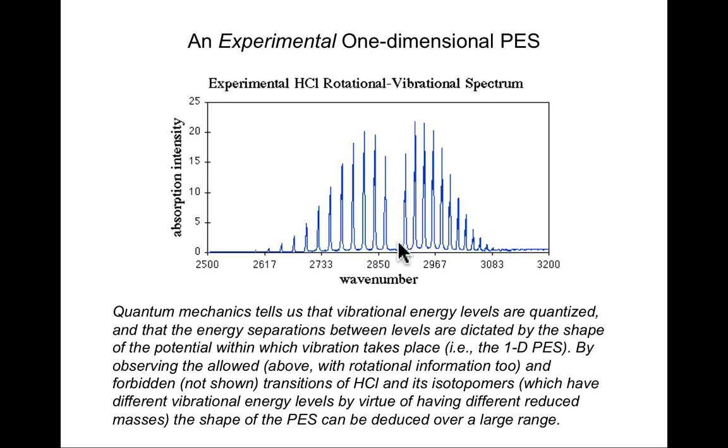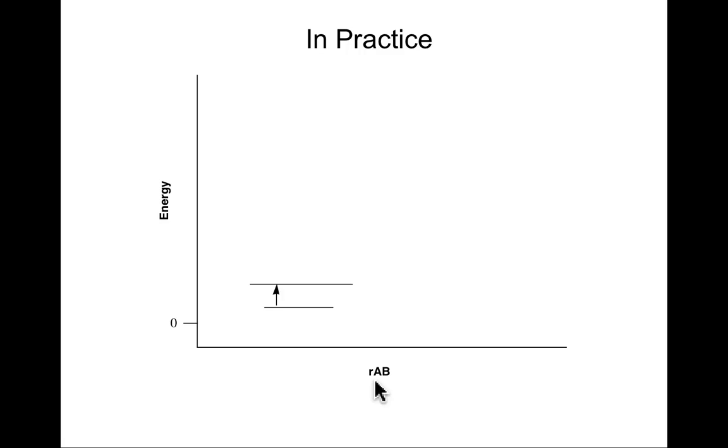I can do this not only for HCl, but also for DCl. That's in the undergraduate physical chemistry lab experiment. With isotopes, because they'll have different reduced masses but not necessarily very different force constants, you will be able to observe different sorts of transitions between different energy levels and potentially map out a potential energy surface. Let's look at that in practice.